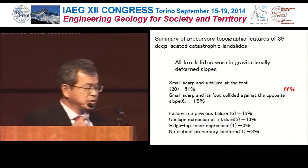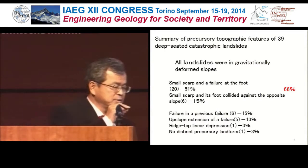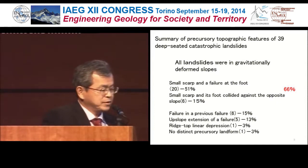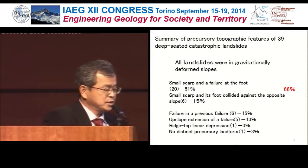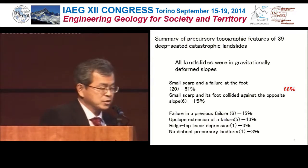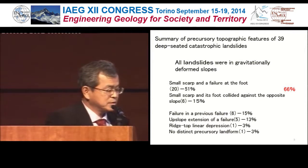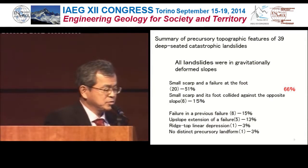This is a summary of precursory topographic features of the 39 deep-seated catastrophic landslides. All landslides were in gravitationally deformed slopes. Small scarps with failure at the foot accounted for 51%. Small scarps whose foot collided against the opposite slope accounted for 15%. So altogether, 66% had small scarps along future crowns. Other types included failure within a previous failure, upslope extension of a failure reaching a linear depression. Only one case showed no distinct precursory landform, but it was still within a gravitationally deformed slope.